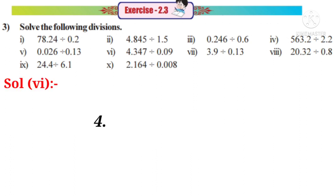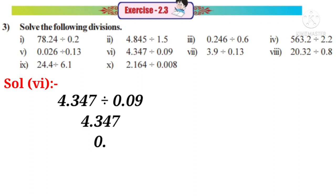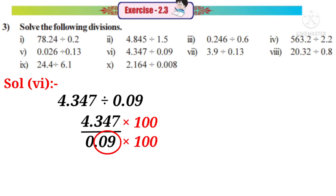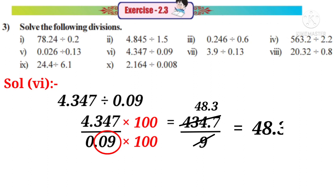Solution 6: 4.347 divided by 0.09, that means 4.347 by 0.09. Observe that there are 2 decimal places in the denominator. So we have to multiply with a number which has 2 zeros after 1, that is by 100. The decimal place will shift right side after two digits in the numerator. So it becomes 434.7 by denominator becomes 9. On simplification by 9, the answer is 48.3.